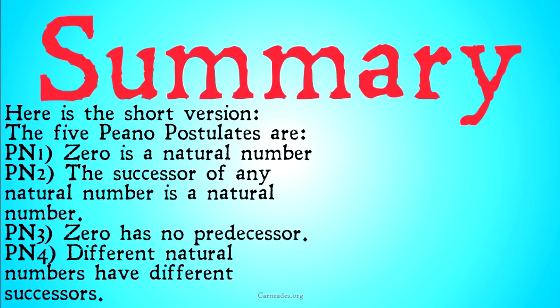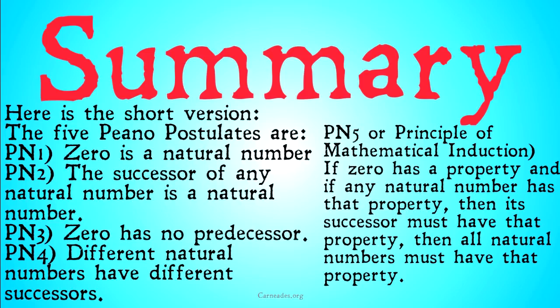And number five, or the principle of mathematical induction: if 0 has a property, and if any natural number has that property then its successor must also have that property, then all natural numbers must have that property. If any of these postulates are confusing, do not worry — we will touch on them more later.